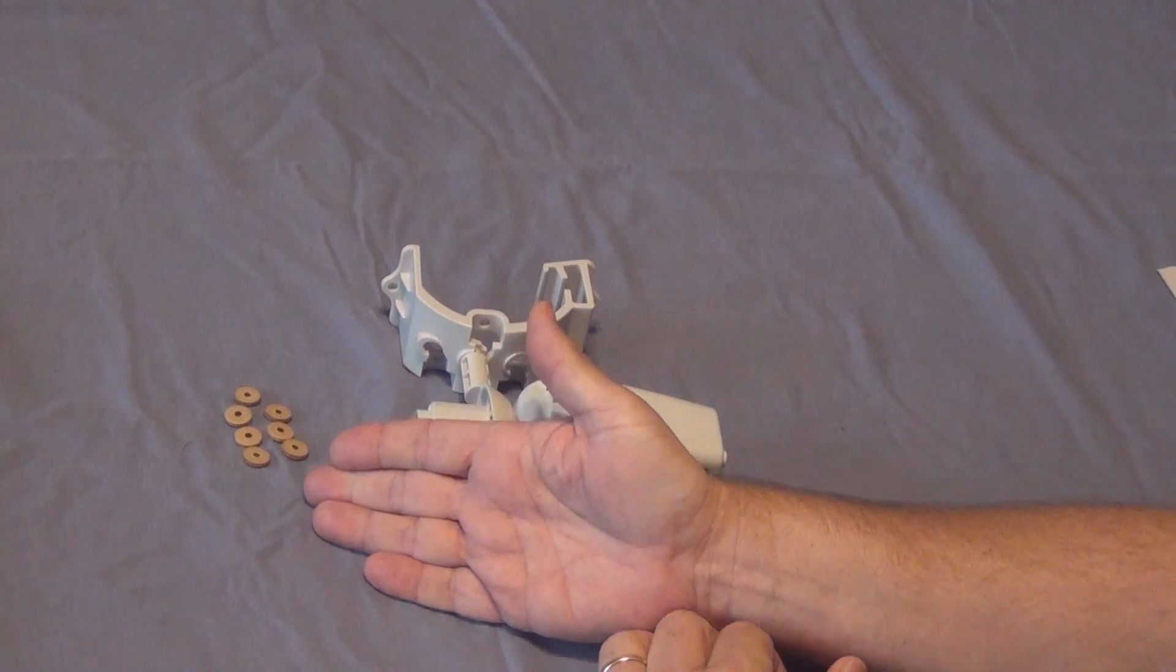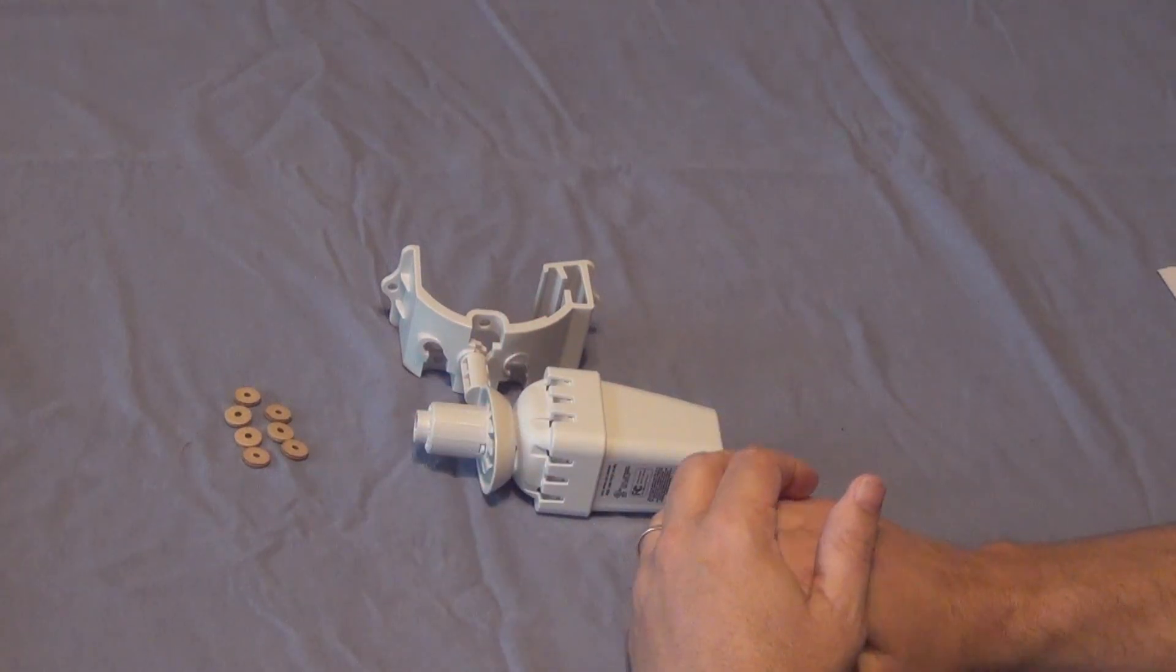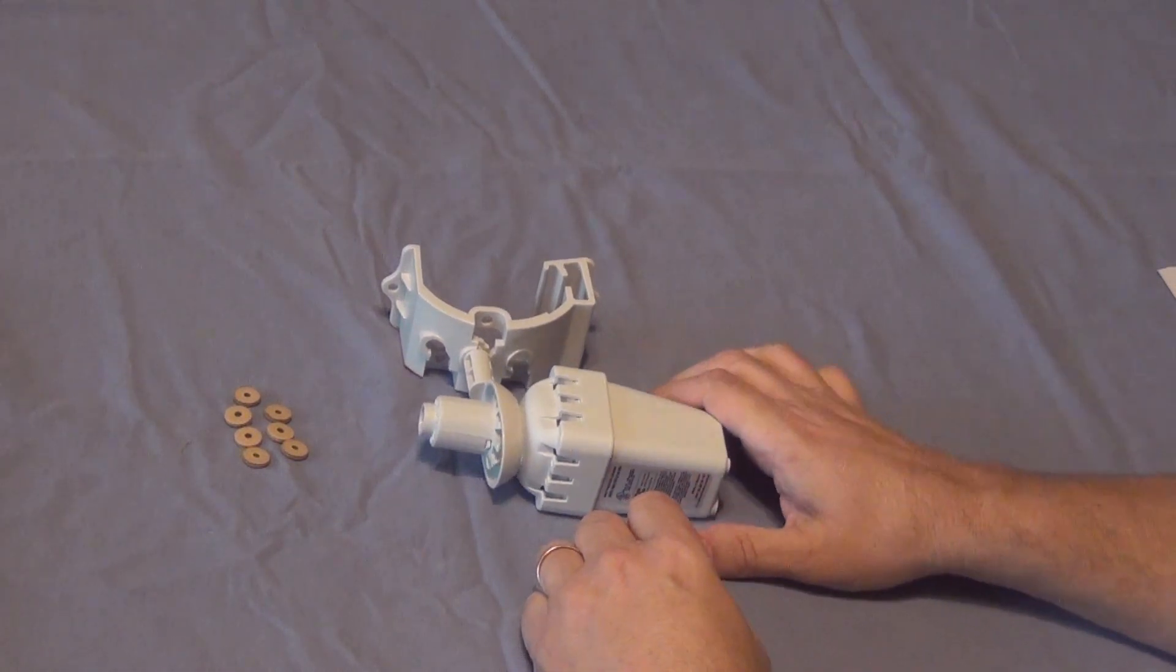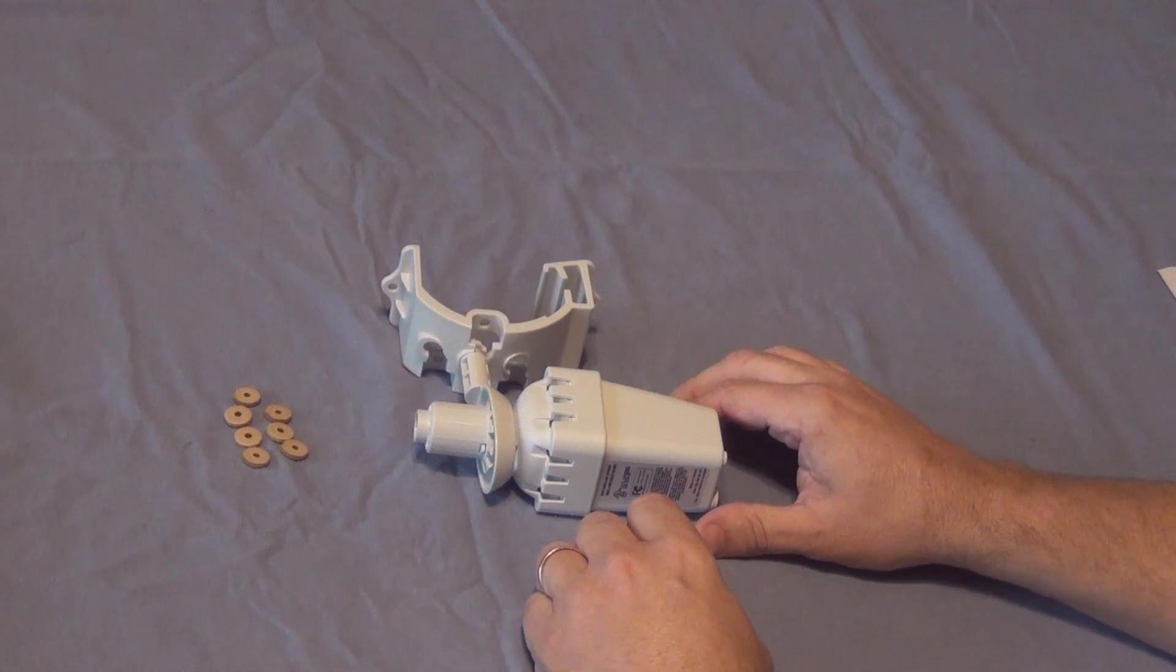I have these replacement discs for sale on my eBay store, and there will be a link to it in the video description section and also at the end of the video. This is a very easy fix. It can be done without tools, and you can save hundreds of dollars from not having to call an irrigation repairman to come out and fix it.